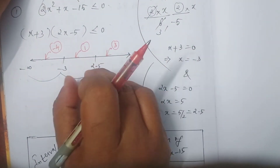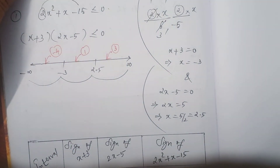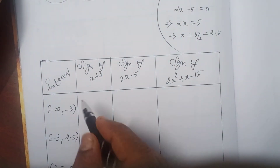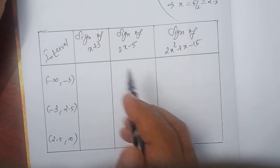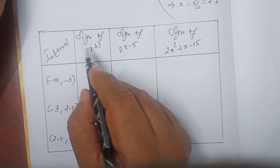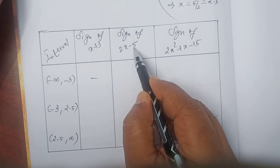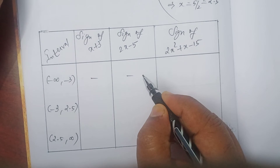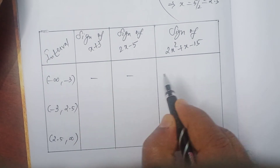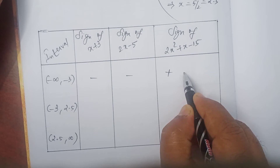You can take any number within each interval. I have taken minus 4, 1, and 3. Now substitute x equals minus 4. Minus 4 plus 3 equals minus 1, which is negative. For 2x minus 5: 2 into minus 4 is minus 8, minus 8 minus 5 equals minus 13, which is also negative. Negative times negative is positive, which is greater than 0.